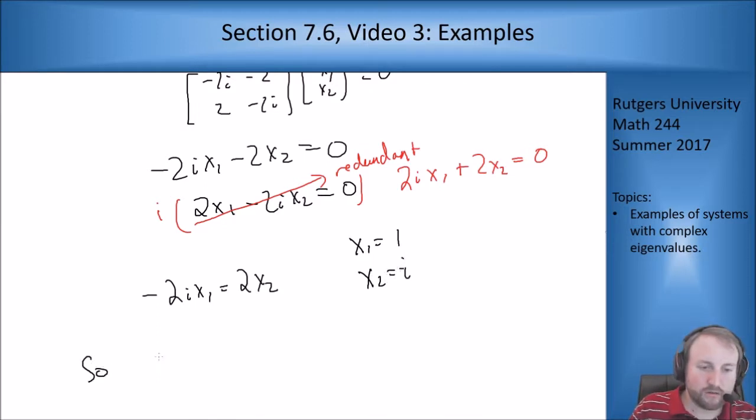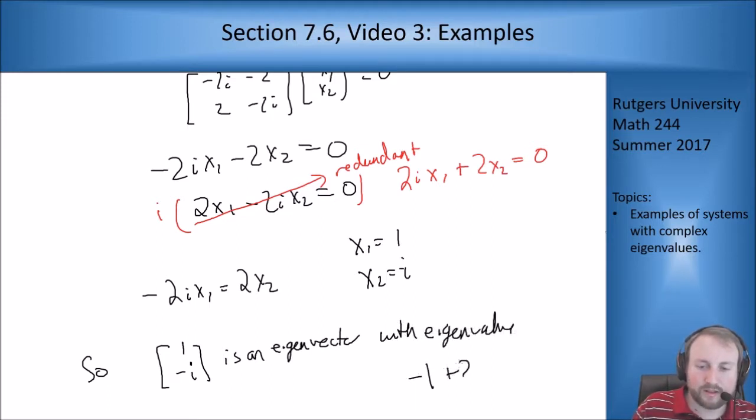So if I pick x1 to be 1, then x2 is negative i. So what I get is 1, negative i is an eigenvector with eigenvalue negative 1 plus 2i.